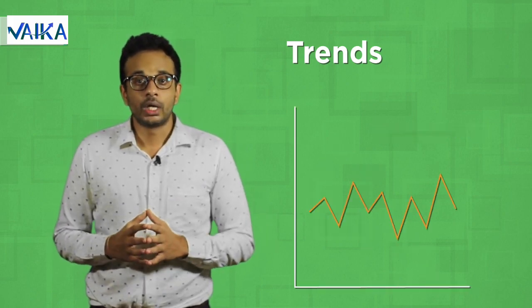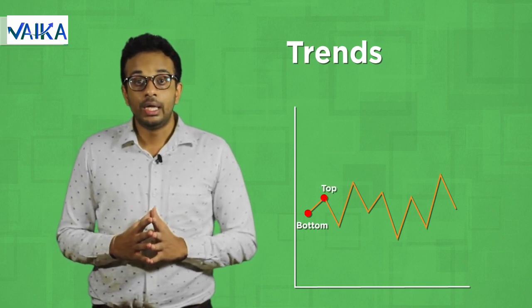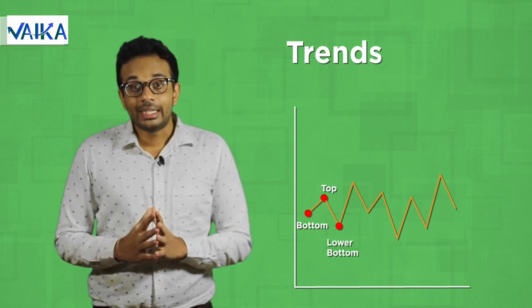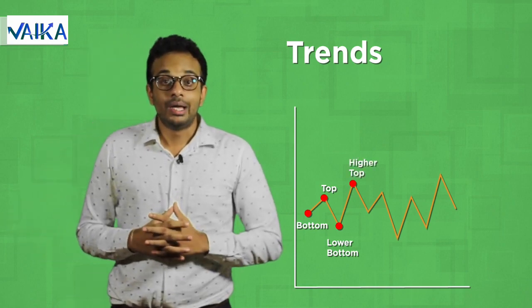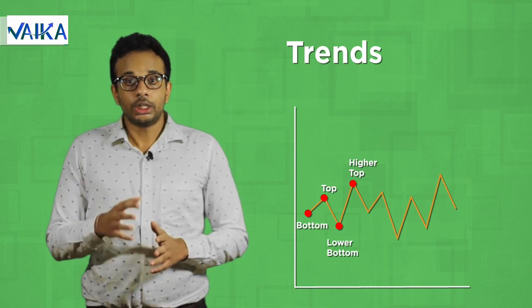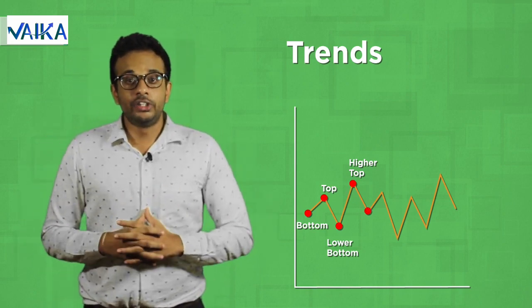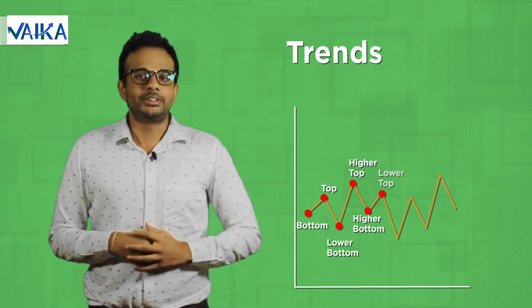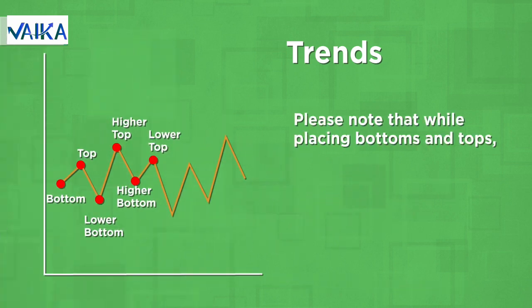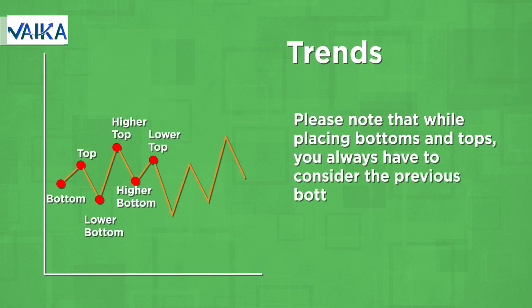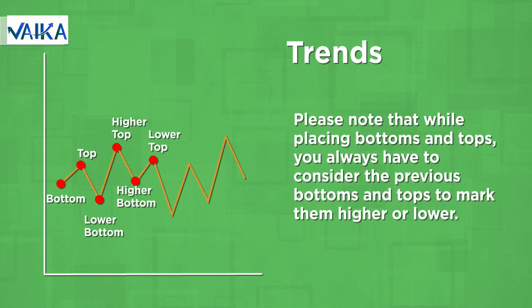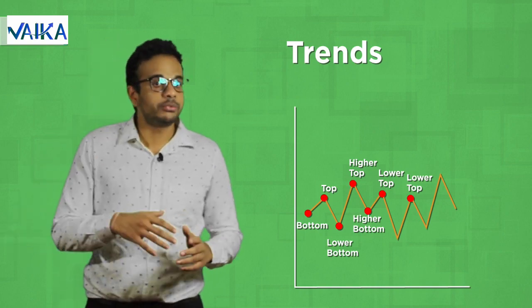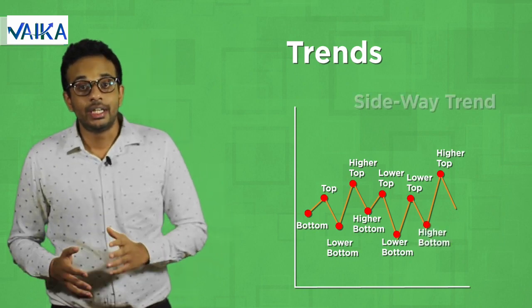Now let's look at this line chart. We place the first bottom and top. The next bottom is lower than the previous bottom, so we call it a lower bottom. But the second top is higher than the previous top, so it is called a higher top. The third bottom is higher than the second bottom, hence a higher bottom. And the third top is lower than the previous top, hence called a lower top. Please note that while placing bottoms and tops, you always have to consider the previous bottoms and tops to mark them higher or lower. In this current price chart, there is neither a series of higher bottoms and higher tops nor a series of lower bottoms and lower tops. Such a line chart indicates a sideway trend in the market.